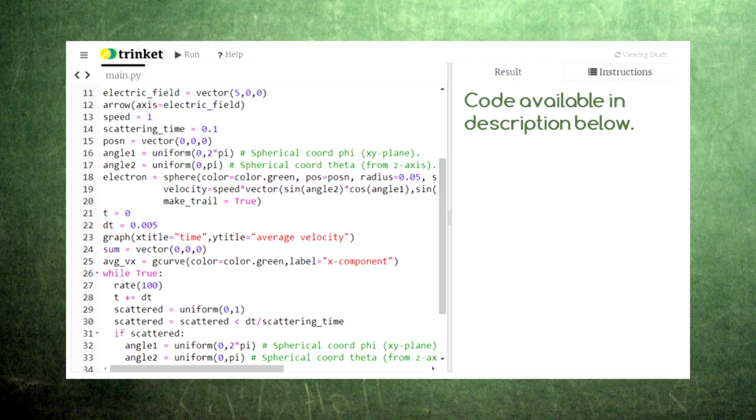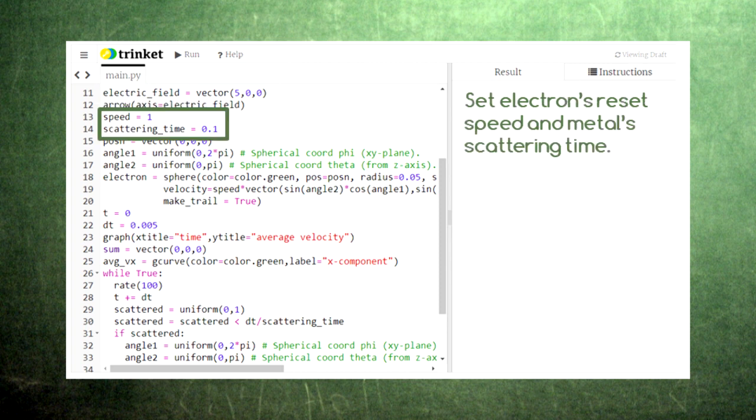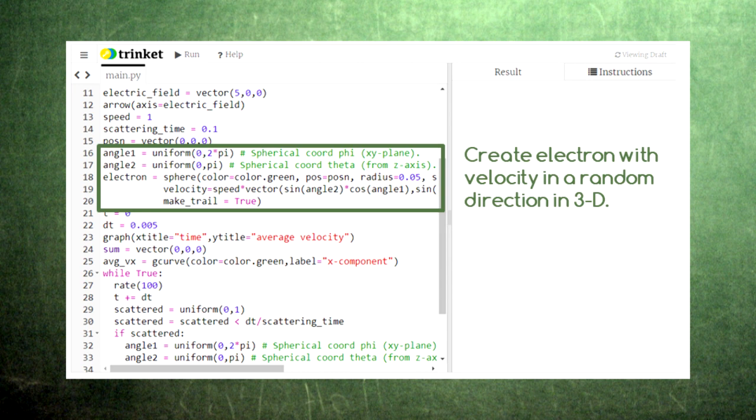In this code, we set up an electric field pointing to the right. We also set the electron's reset speed and the metal's scattering time. Then we create a single electron, which will start out with a velocity of the given speed and a randomized direction.